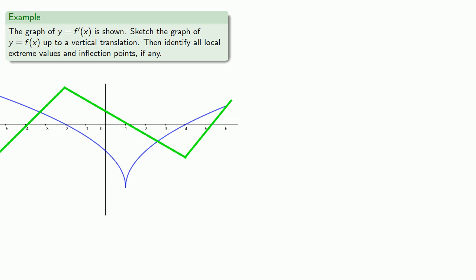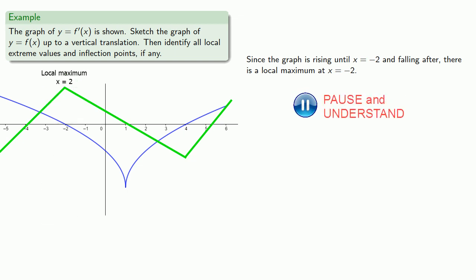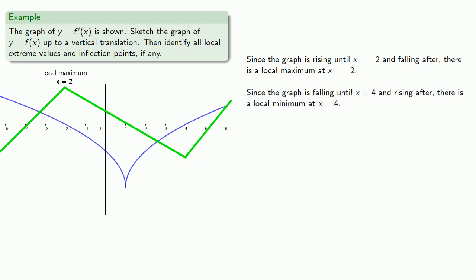Think about this stick figure as the skeleton of the graph — it shows us a lot of information, and in fact we can find extreme values. The graph is rising until x equals negative 2 and falling after, so there's a local maximum at x equals negative 2. And since the graph is falling until x equals 4 and rising after, there's a local minimum at x equals 4.